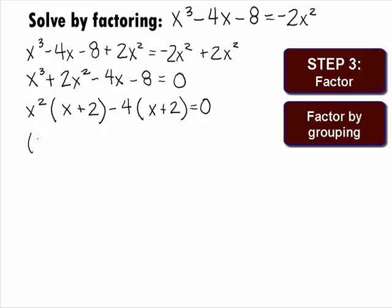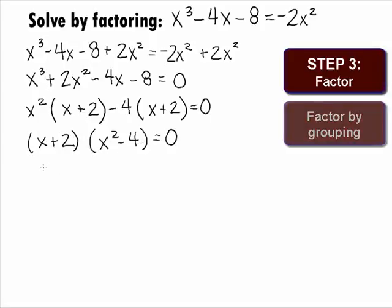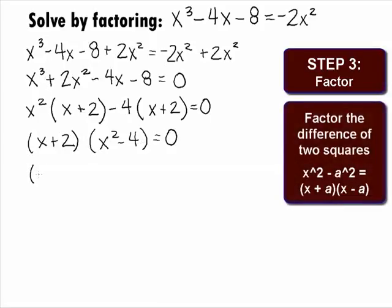Factoring out a common binomial of x plus 2, we get x plus 2 times x squared minus 4 equals 0. And x squared minus 4 will factor as a difference of two squares, which will give us x plus 2 times x plus 2 times x minus 2 equals 0.